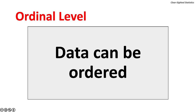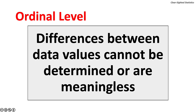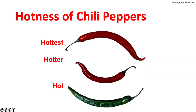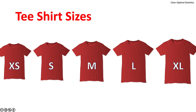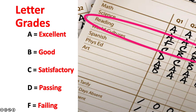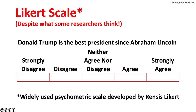Ordinal data, as the name suggests, can be ordered. The data are measured with ordinal numbers — first, second, third, and so forth — but the difference between data values cannot be determined or are meaningless. The hotness of chili peppers measured on a scale of hot, hotter, and hottest is an ordinal measure. The order of finish of beauty contest winners is an ordinal measure because we lack information on the number of votes separating these ranks. T-shirt sizes ranging from extra small to extra large, letter grades A through F, and the Likert scale are all ordinal rankings. That said, many researchers treat the Likert scale as if it were an interval level of measurement.